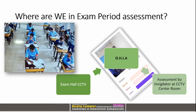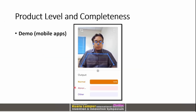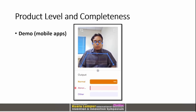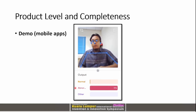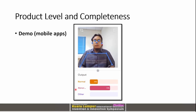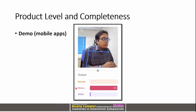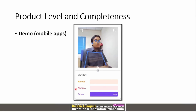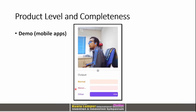Here is a demo of the product. We can see the normal action, where the student raises their hands or elbow. Abnormal action is indicated when the student turns left or right, or changes position — any extraordinary action performed by the student.